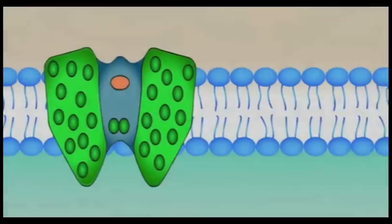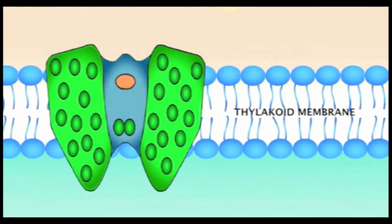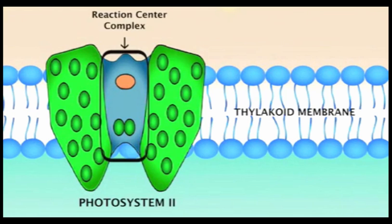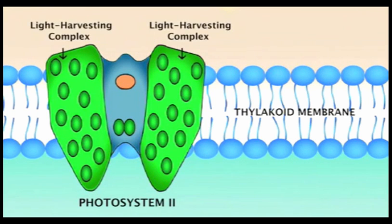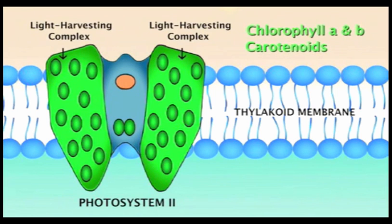The first complex at work in the light-dependent reactions of photosynthesis is photosystem II. It consists of a reaction center complex surrounded by several light harvesting complexes. Each light harvesting complex contains various photosynthetic pigment molecules, including chlorophyll A and B, as well as light absorbing compounds called carotenoids, all of which are bound to special proteins.